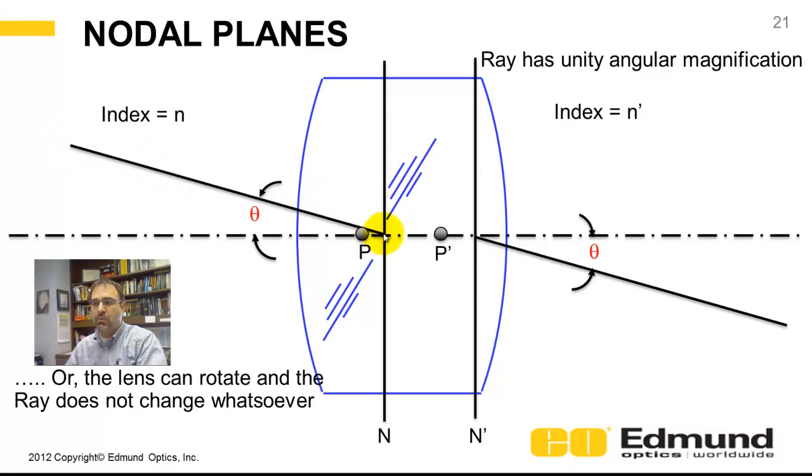It's going to come out the other nodal point with unity angular magnification. Set another way, you can rotate the ray.